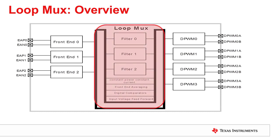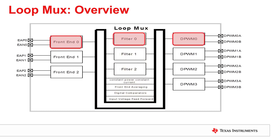The loop MUX controls the connections between the different parts of the control loop — the front end, the filter and the DPWM. In this series of tutorials, we will configure the loop MUX to drive DPWM0 with filter 0 and filter 0 with front end 0. We will also route the sample trigger from DPWM0 back to front end 0. The loop MUX also has a global enable register, which we will configure to enable front end 0 and DPWM0 simultaneously.